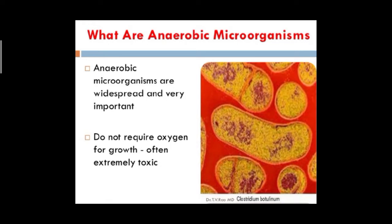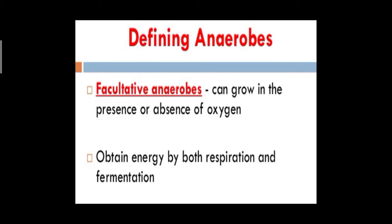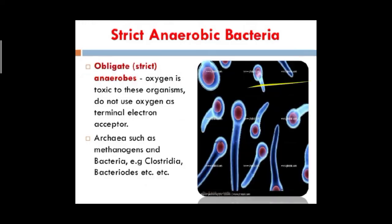There are different definitions of anaerobes. Facultative anaerobes are microorganisms that can grow in the presence or absence of oxygen — they obtain energy by both respiration and fermentation. Strict or obligate anaerobes, on the other hand, don't need any oxygen for cell growth; in fact, oxygen is toxic to them.